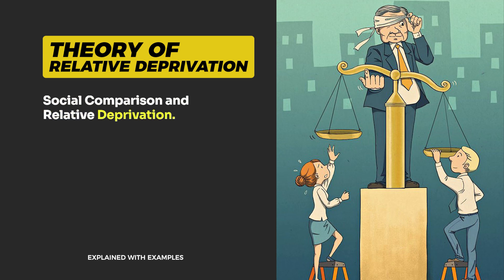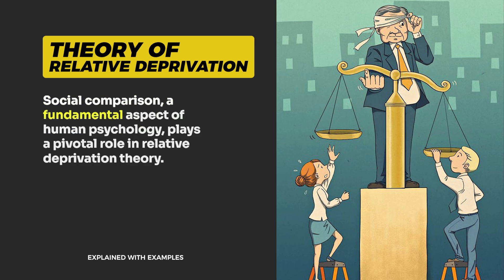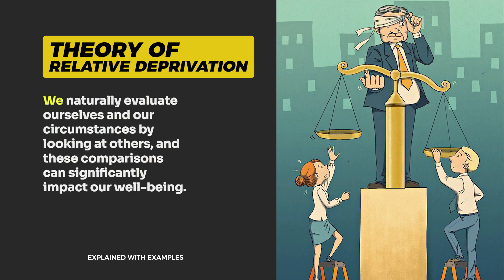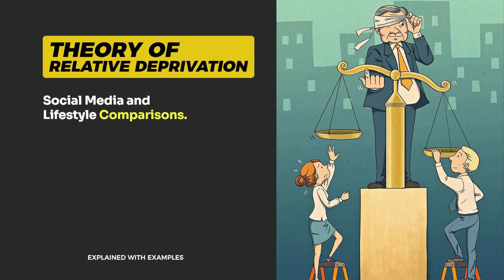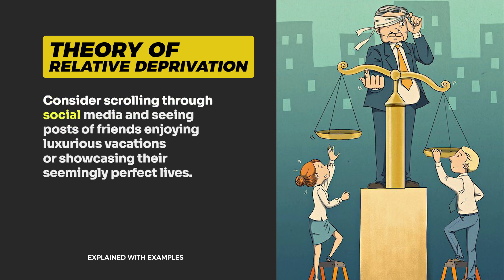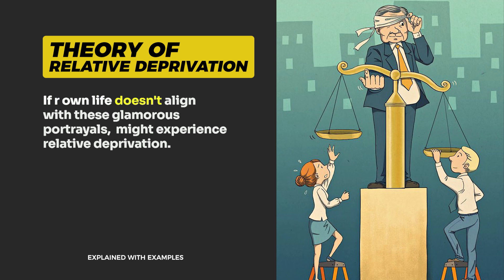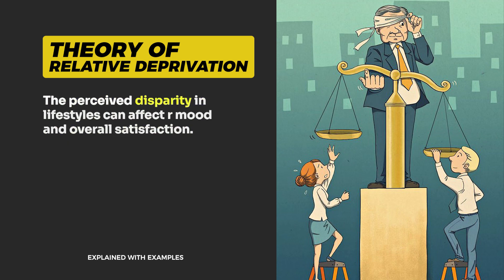Social comparison and relative deprivation. Social comparison, a fundamental aspect of human psychology, plays a pivotal role in relative deprivation theory. We naturally evaluate ourselves and our circumstances by looking at others, and these comparisons can significantly impact our well-being. For example, consider scrolling through social media and seeing posts of friends enjoying luxurious vacations or showcasing their seemingly perfect lives. If our own life doesn't align with these glamorous portrayals, we might experience relative deprivation. The perceived disparity in lifestyles can affect our mood and overall satisfaction.